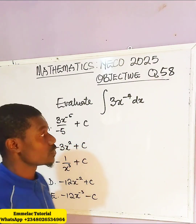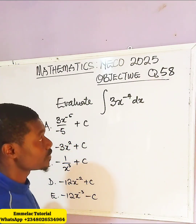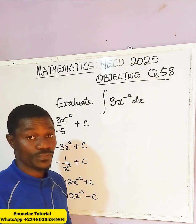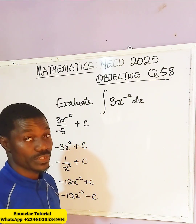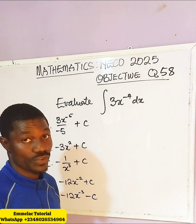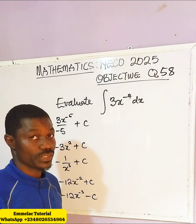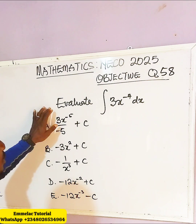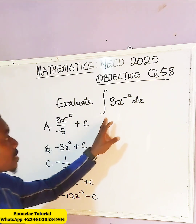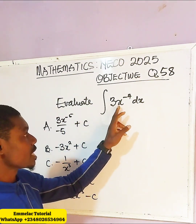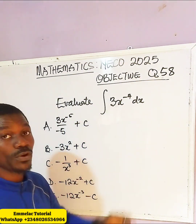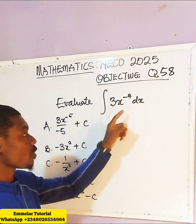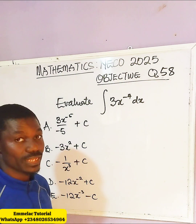Welcome to Milak Online Tutorial 9. Here is question 58 of the NECO 2025 objective question: evaluate the integral of 3x raised to the power of negative 4 dx.